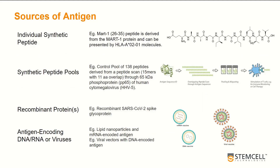Let's switch gears and look at different sources of antigen. In some cases, a single peptide sequence can be used to activate antigen-specific T-cells. This is most suitable if we have information about the HLA repertoire of the individual and which peptides are commonly and effectively presented by a particular HLA allele to drive T-cell activation. An example we commonly use is the peptide called MART1, derived from the protein also called MART1. The sequence spanning residues 26 through 35 is very effectively presented by HLA-A*02:01 molecules.